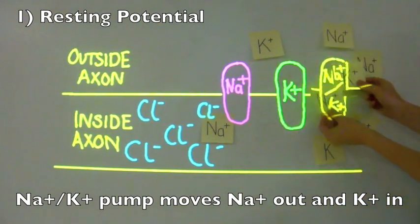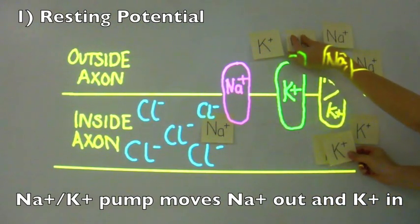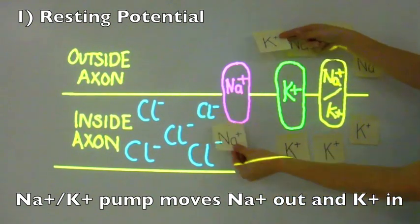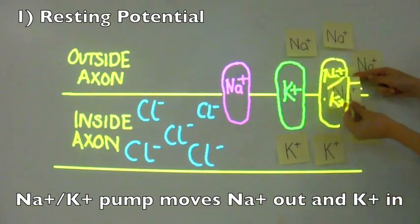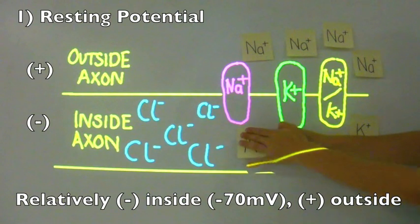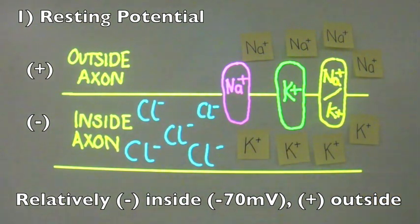These ions move by active transport through the sodium potassium pump, requiring energy in the form of ATP. The net result is that the inside of the axon is relatively negative while the outside is relatively positive.